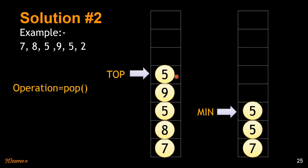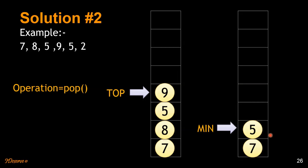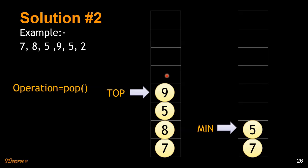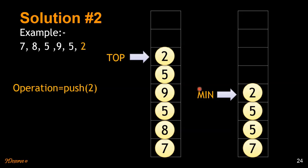We pop from both stacks when equal. Then we have 9, which is greater than the top of the min stack, so 5 remains the minimum for the whole stack. If we pop out 9, 5 will still remain minimum for the remaining stack. Now there is another 5 — if we pop this 5, we also pop the minimum element 5 from the min stack because they are equal. This shows why we keep track of duplicate minimums.